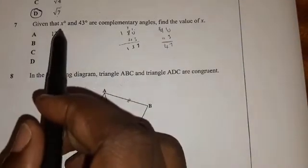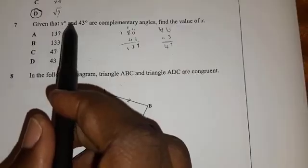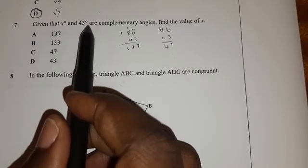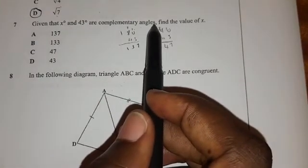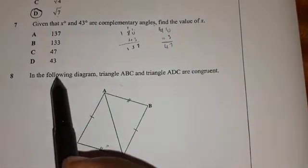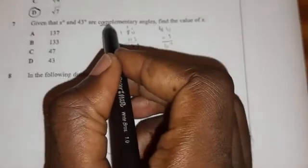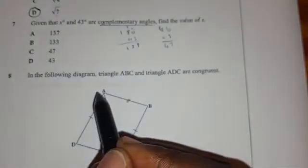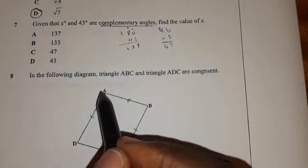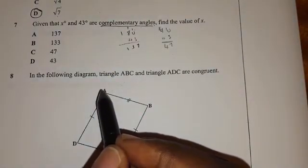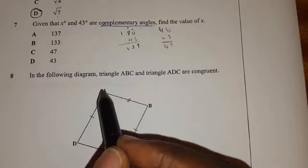Number seven, given that X degrees and 43 degrees are complementary angles, find the value of X. First of all, you need to understand what complementary angles are. What are complementary angles? Complementary angles are two angles that when you add them, you get 90 degrees.